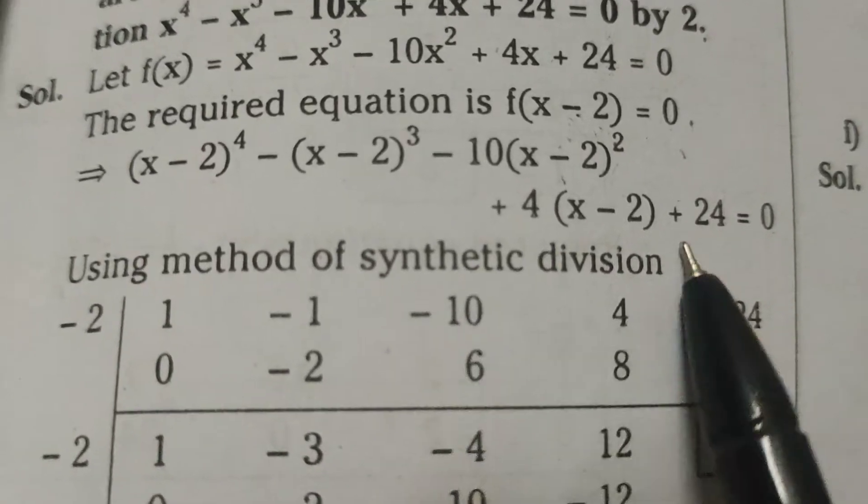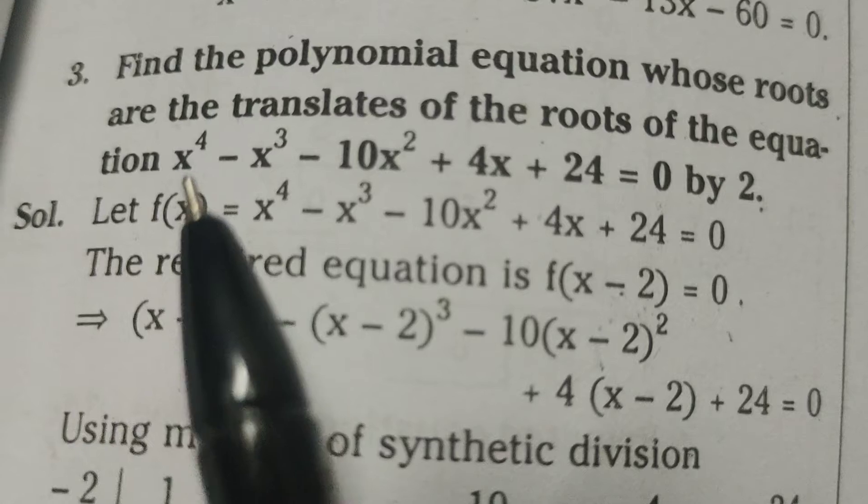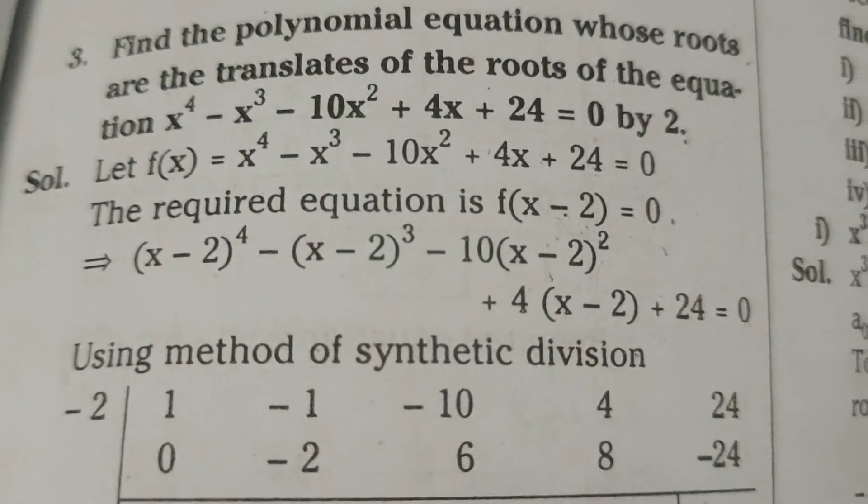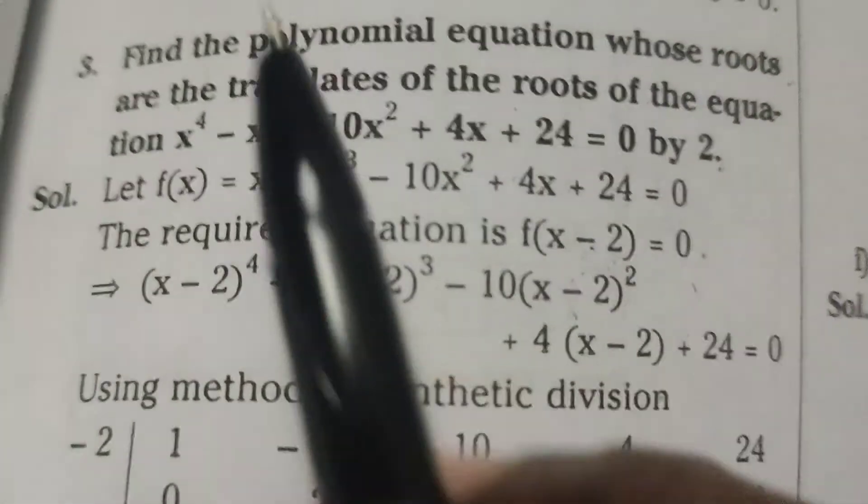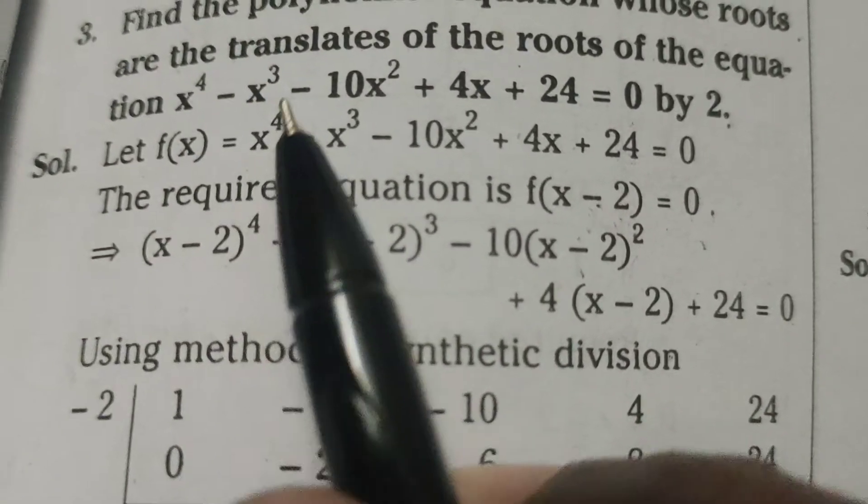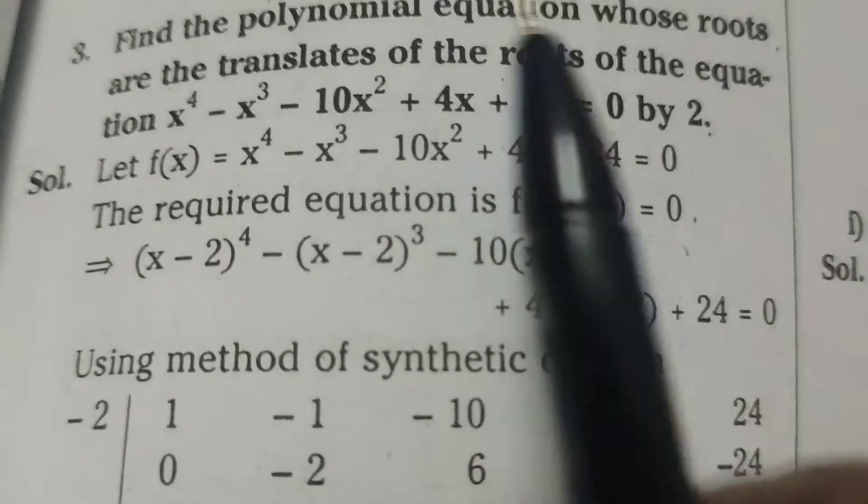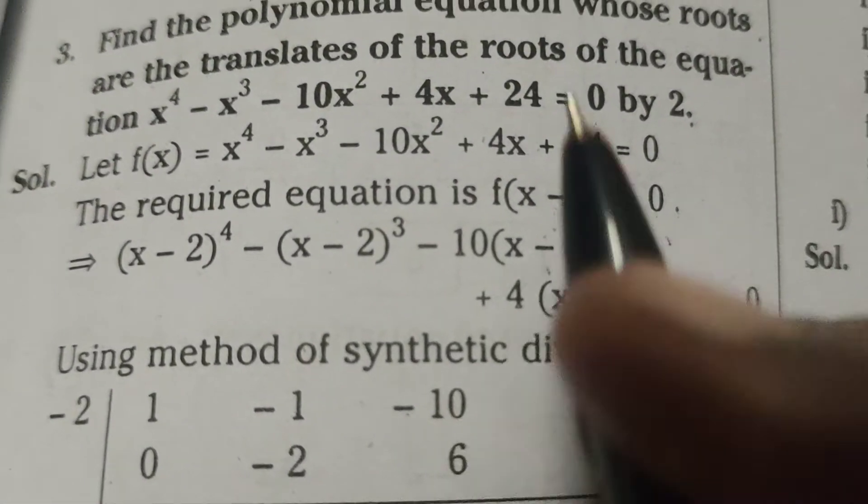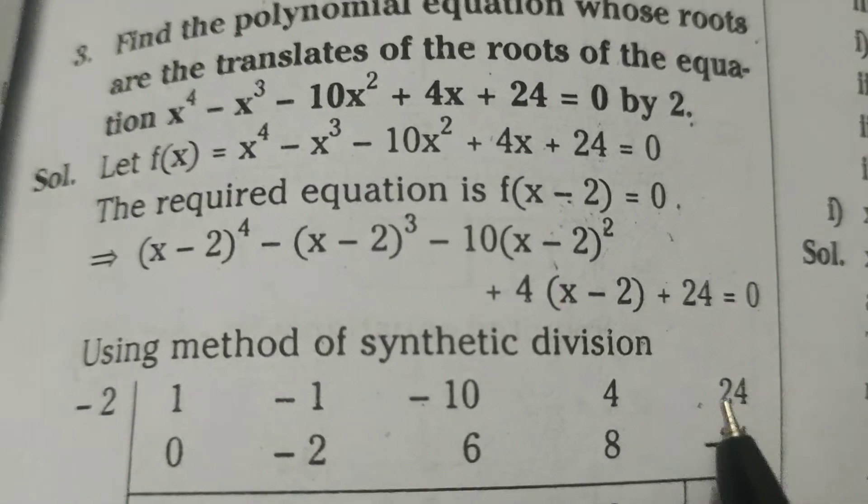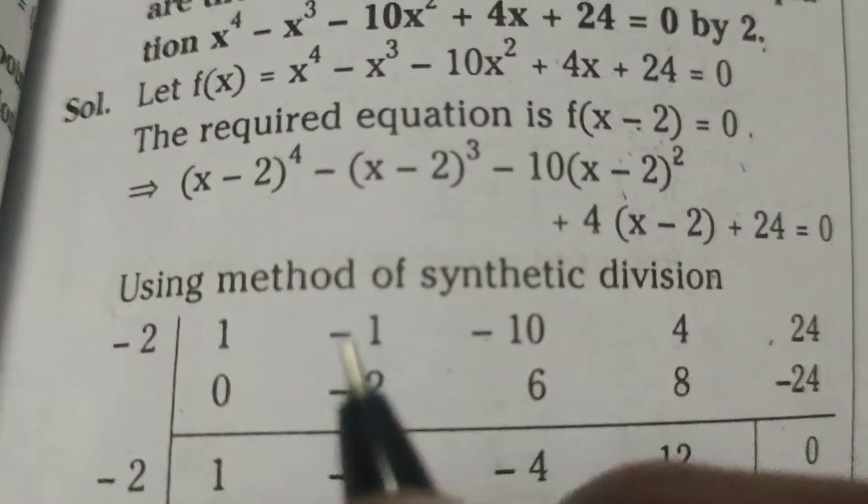Now using the method of synthetic division, first of all to find out the remaining roots of x. Here, x power coefficient means 1 and x cube coefficient means -1, x square coefficient means -10, x coefficient means 4. Here, 24. First of all, by the method of synthetic division.